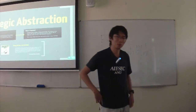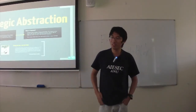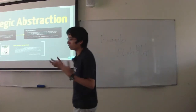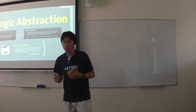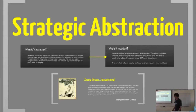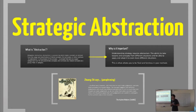Welcome to part two of the strategy workshop. Today I'm using the term 'strategic abstraction' to represent what we're trying to do. We're going to abstract lessons from different situations: one involving a polar bear hunting a walrus, another from SimCity 4, and also the relationship between redundancy and efficiency.